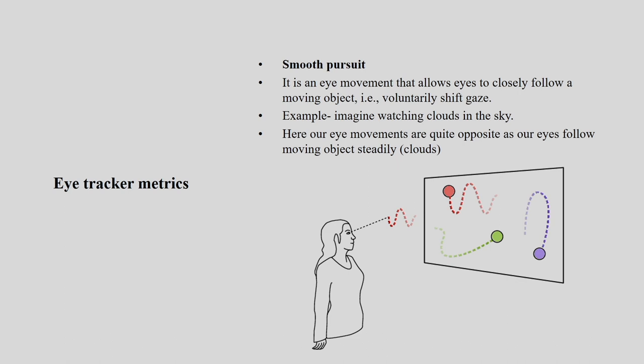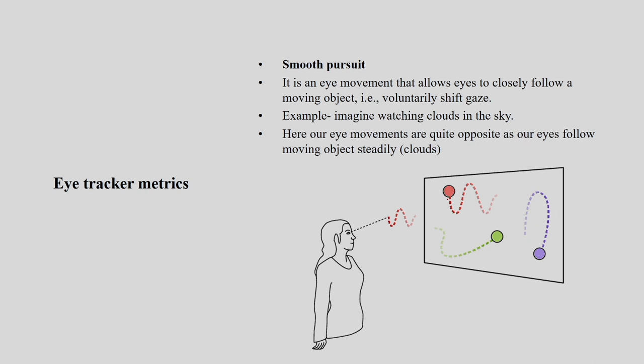Smooth pursuit is when there is a very smooth movement with no jerk — a very smooth movement. It is an eye movement that allows the eye to closely follow a moving object and it is a voluntary shift of gaze. You are voluntarily doing it. For example, when you are trying to follow a cloud moving — your gaze is also moving, following the cloud — that is a very smooth movement. That is smooth pursuit.